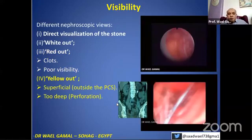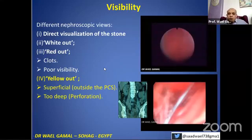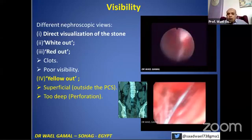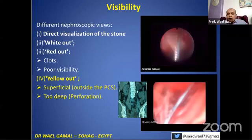There is what's called yellow out. Yellow out means perinephric fat. So you may be outside the pelvicalyceal system, or you may have transfixed the kidney. You can estimate this by the lens with the sheath outside and the guide wire inside — you see the yellow sign, the perinephric fat outside the kidney.